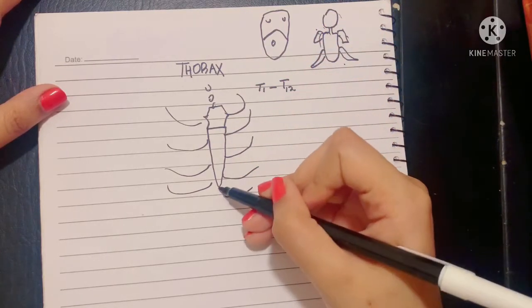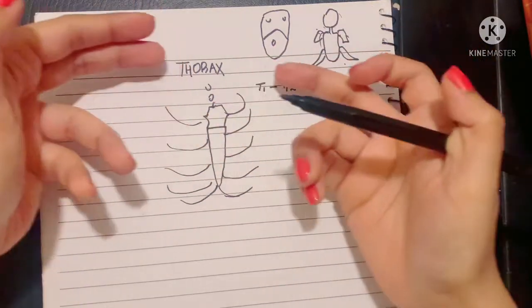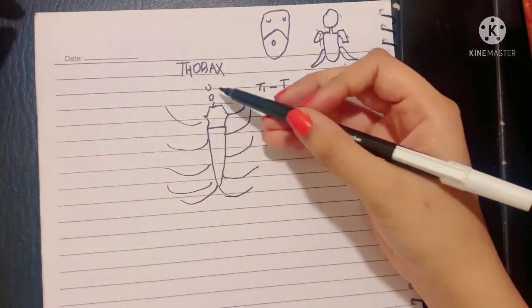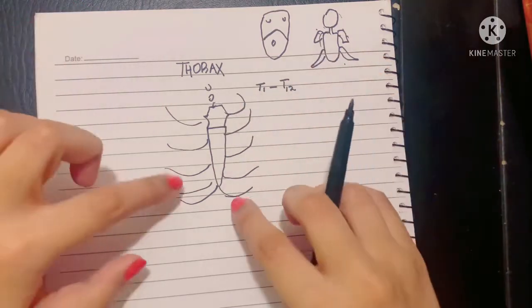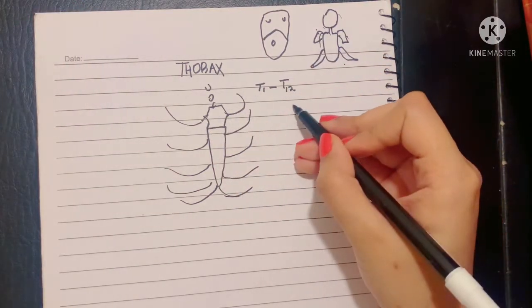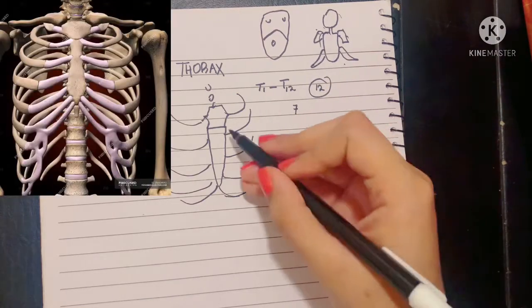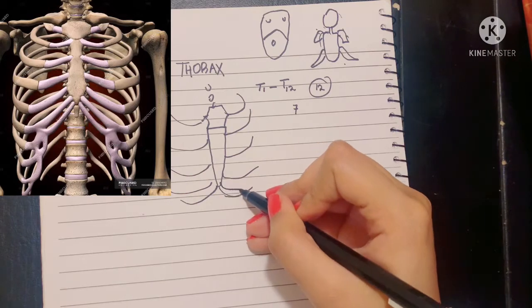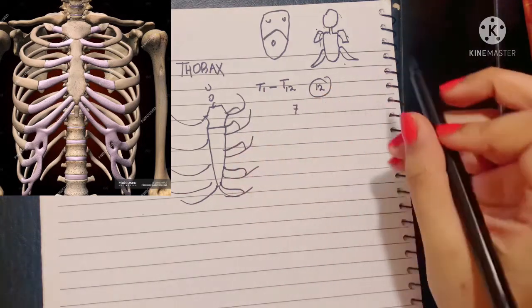So this is your entire thorax and posteriorly are the thoracic segments. Now let's talk about the structure of the thorax which consists of these bones: namely the vertebra, the ribs, and the sternum. Let's talk about the ribs first. The ribs are basically 12 in number, of which the seven upper ribs are connected directly to the sternum via costal cartilages, hence these are the true ribs.